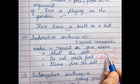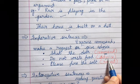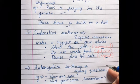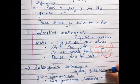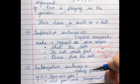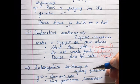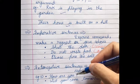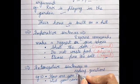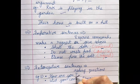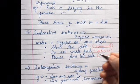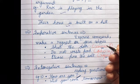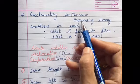The third type is interrogative sentences. Interrogative means we are asking questions from others. Like 'How are you?' or 'Will you come tomorrow?' These sentences always end with a question mark. So interrogative sentences are those in which we are asking questions.